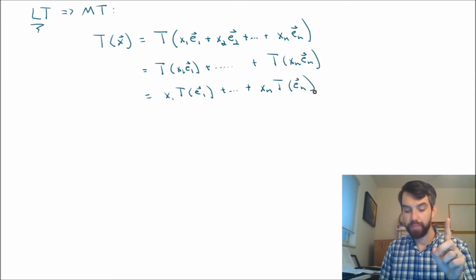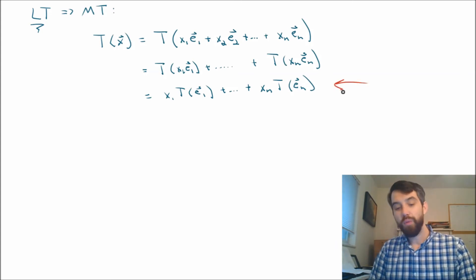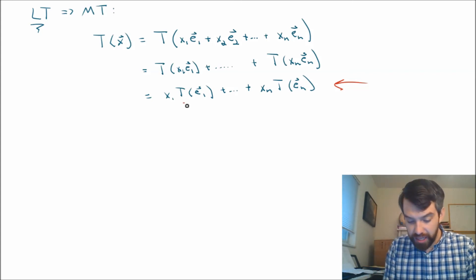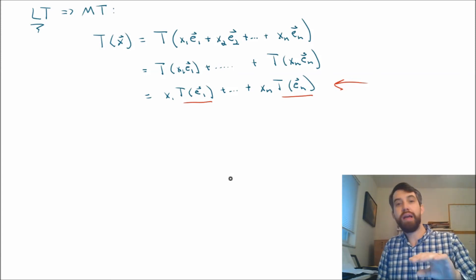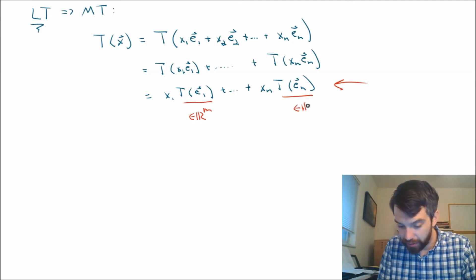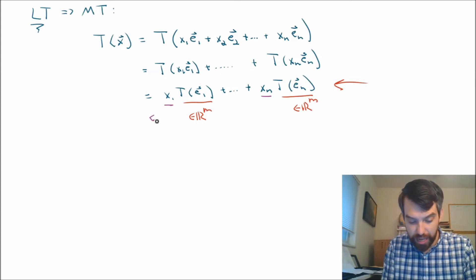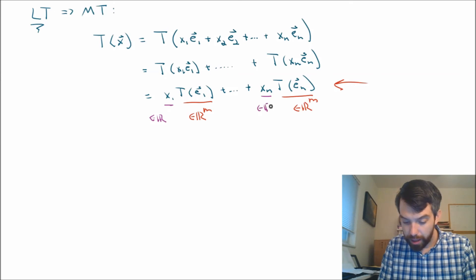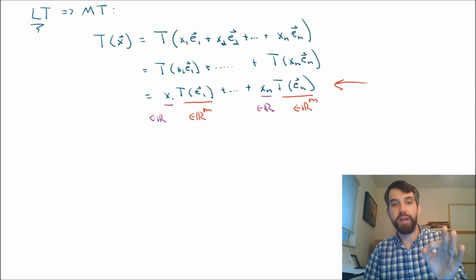Now, here is the most important point. If I look at what I just have here, well, what is this? Each of the Te1's and the Ten's, these are going to be vectors, right? The ei's all lived in Rn, and the transformation takes them to Rm. So, this is some vector that lives inside of Rm, and this is some vector that lives inside of Rm. And then the x1 and the xn, these are just scalars, they just live in R. In other words, what I have here is a linear combination of vectors.